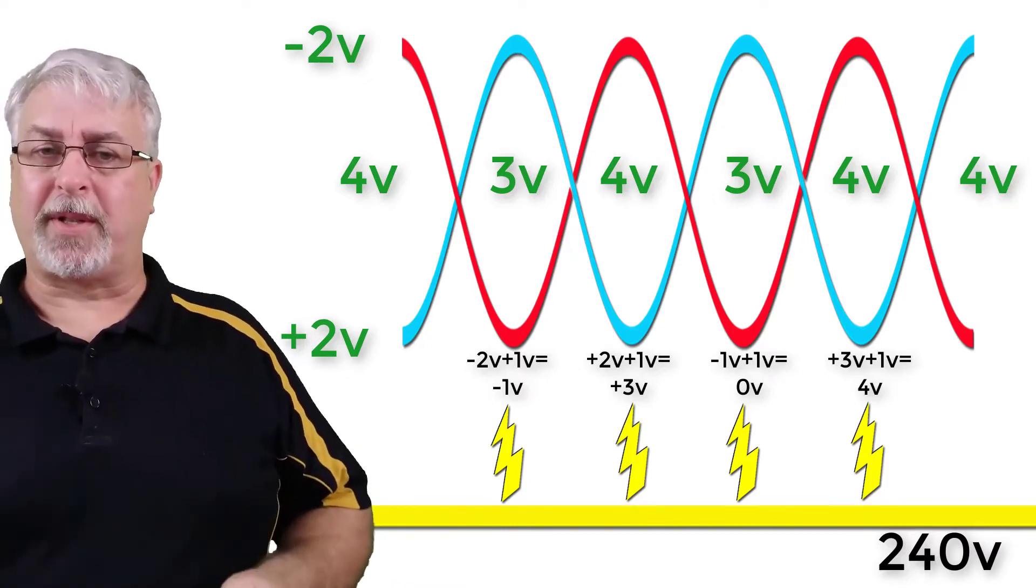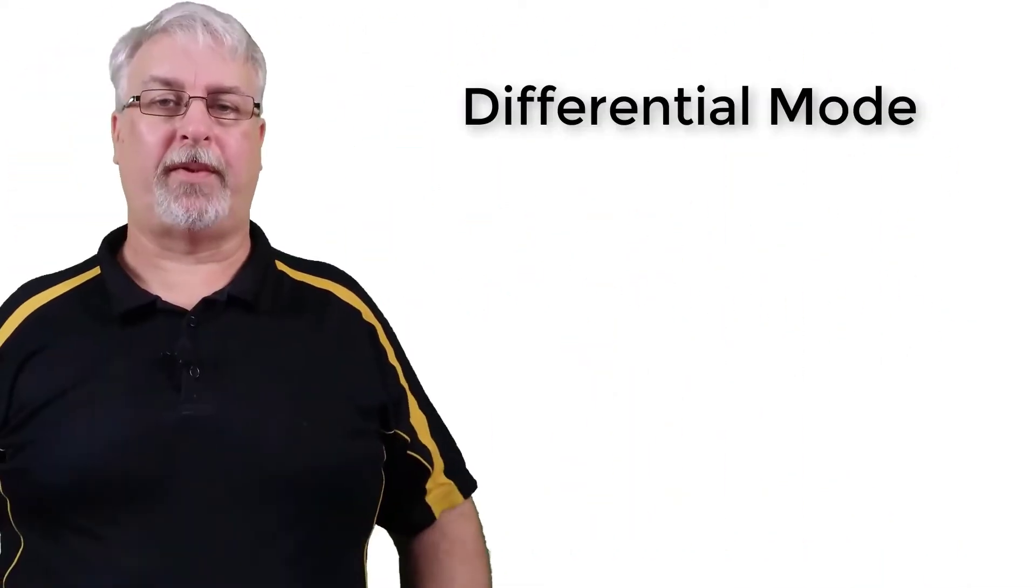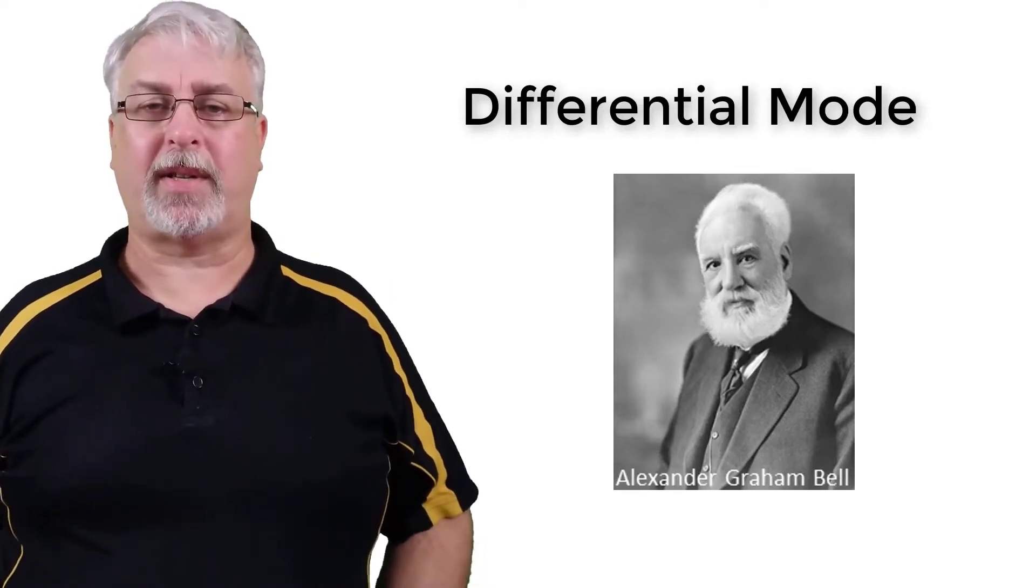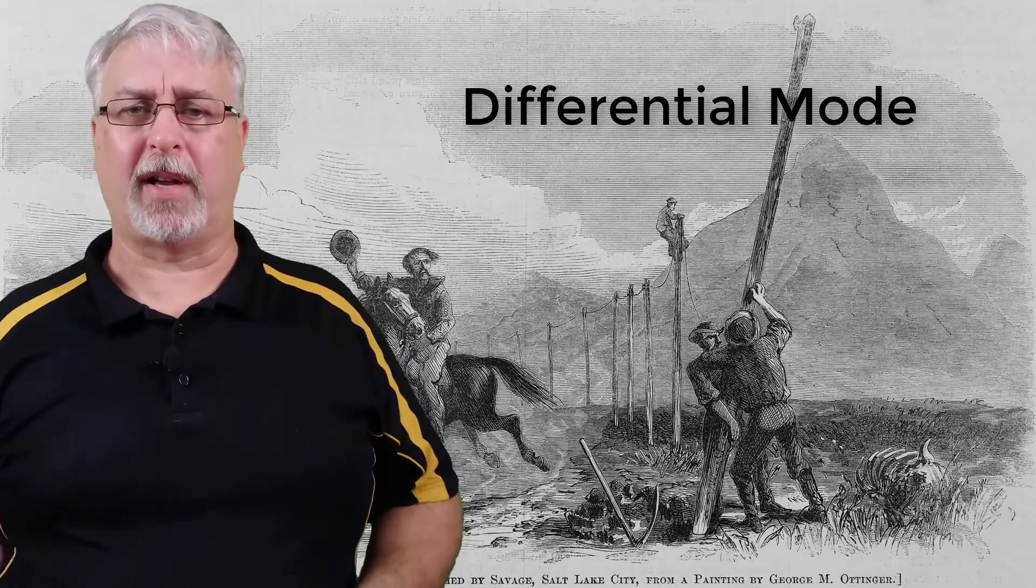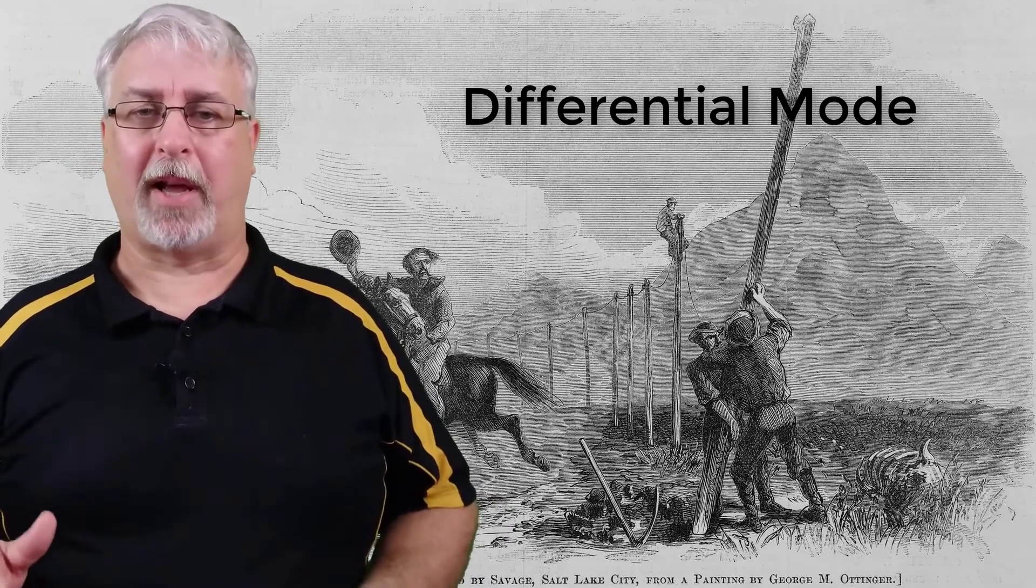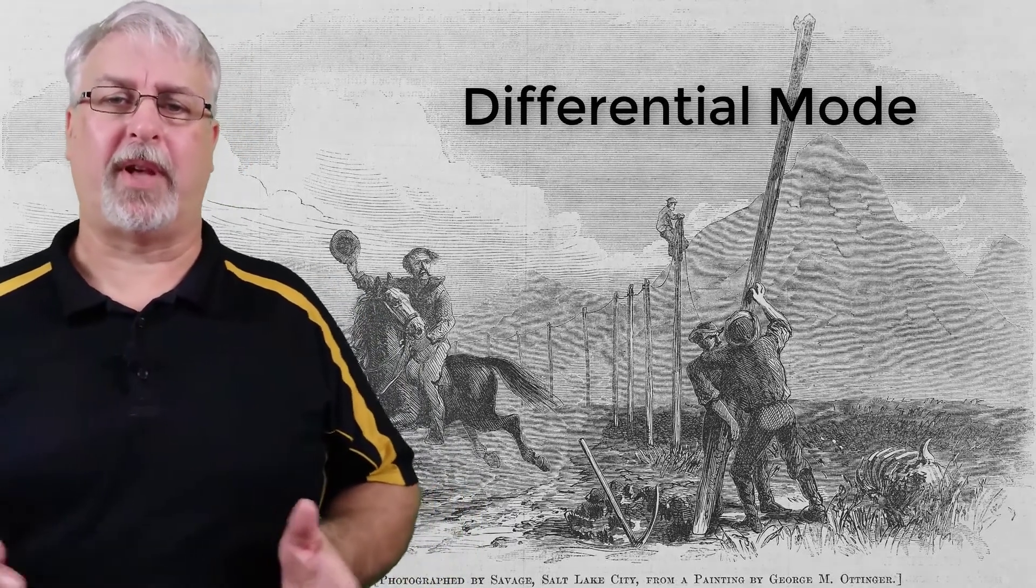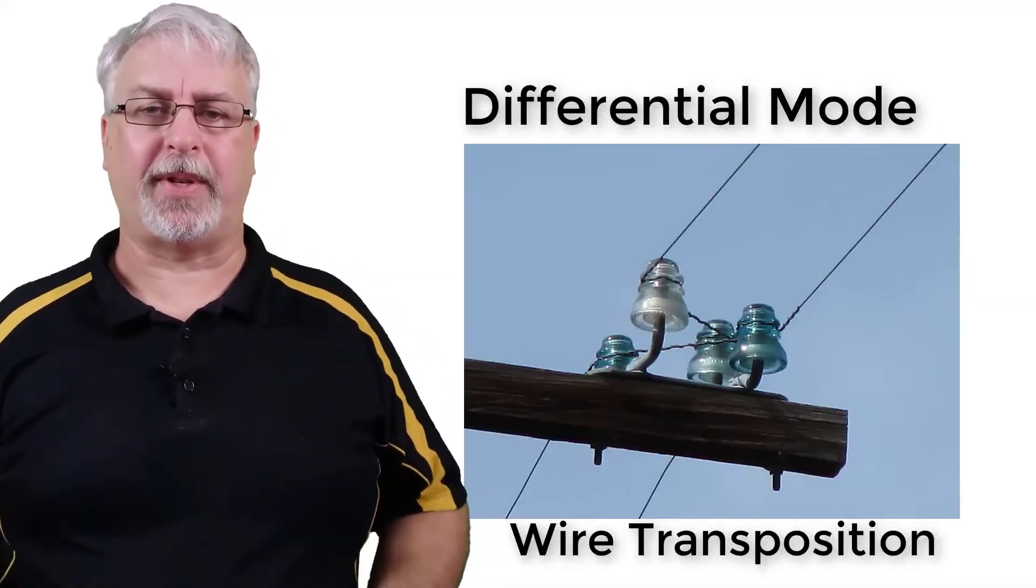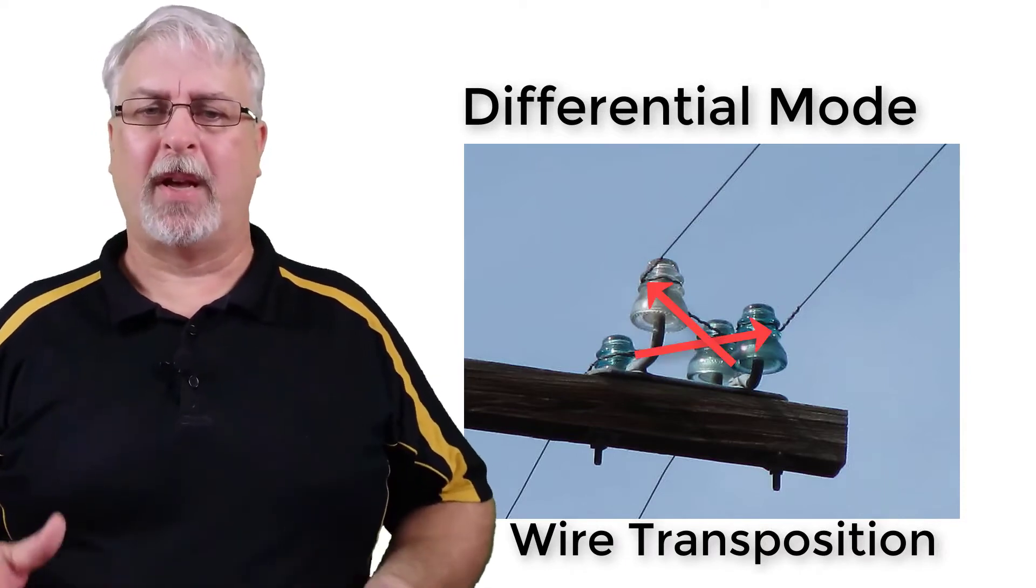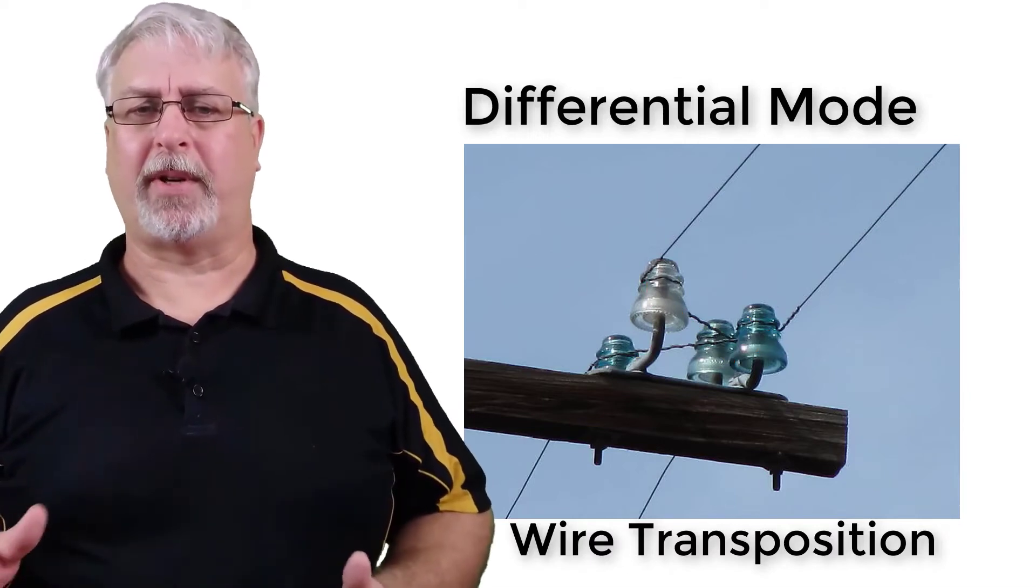This process of using twists to the wires to deal with EMI is called differential mode. Differential mode was discovered by Alexander Graham Bell way back in the 1890s, as a way of dealing with EMI on the original telephone and telegraph lines. As the use of electricity took off, the power lines started playing havoc with the communications lines. The method they came up with to deal with interference was called wire transposition, which is basically swapping the wires over every few poles. This was an early form of wire twisting, with a twist rate of about 4 twists every kilometer.